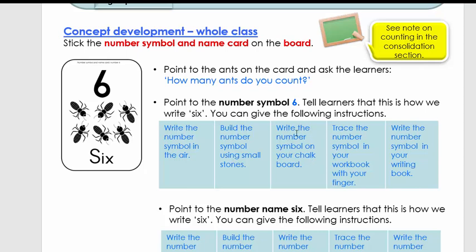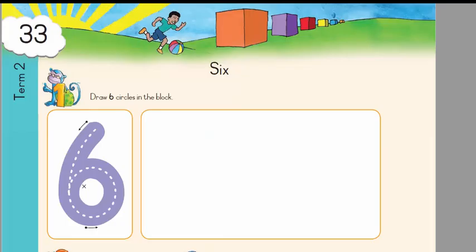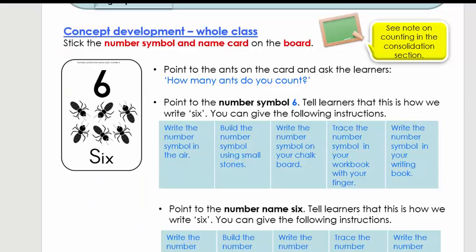Welcome back. So what we're going to do is we're going to write the number symbol now with chalk on the board if you're in the classroom, or just on a piece of paper, nice and big. Now what we want you to do is in your workbook, in your DBE workbook, or where you write the symbol, you're going to trace the symbol now with your finger. And lastly, you're going to write the number symbol now in your writing book.